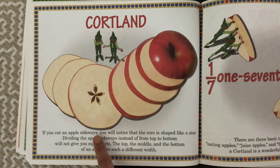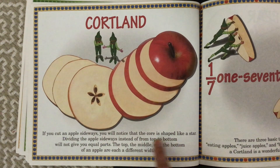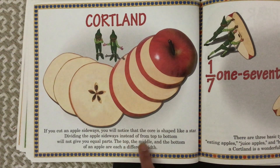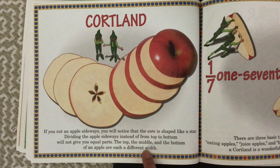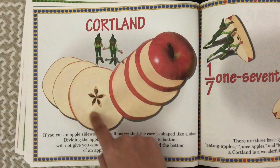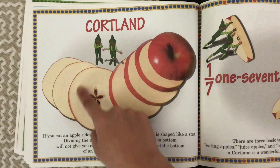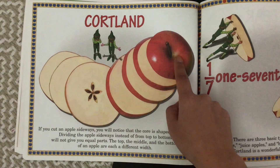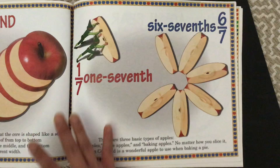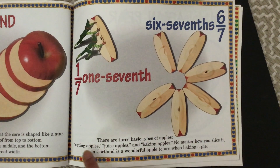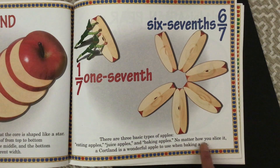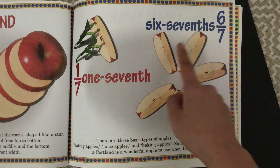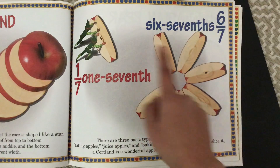Cortland. If you cut an apple sideways, you'll notice that the core is shaped like a star. Dividing the apple sideways instead of from top to bottom will not give you equal parts — the top, middle, and bottom of an apple are each a different width. So if you give someone seven pieces cut that way, you're not creating equal pieces. There are three basic types of apples: eating apples, juice apples, and baking apples. No matter how you slice it, a Cortland is a wonderful apple to use when baking a pie. They cut it into sevenths the correct way, into those wedges.